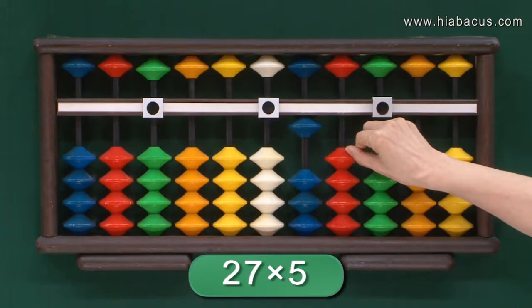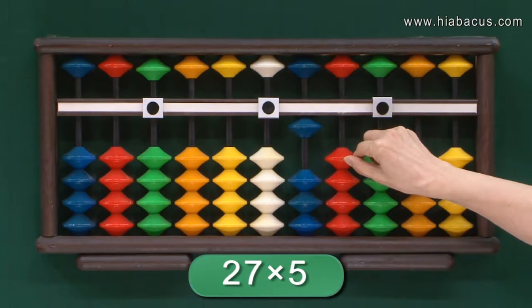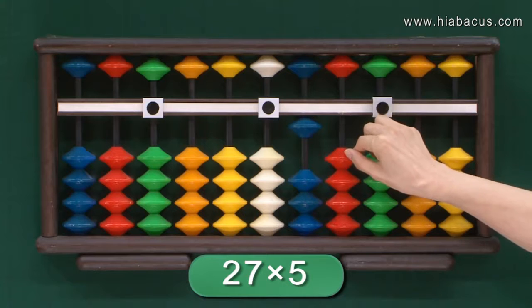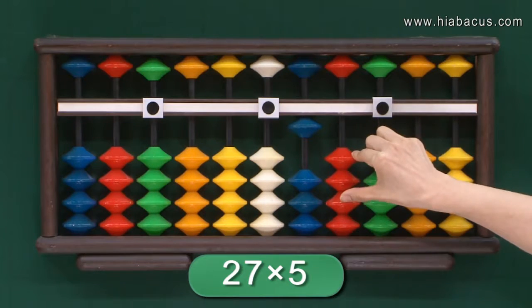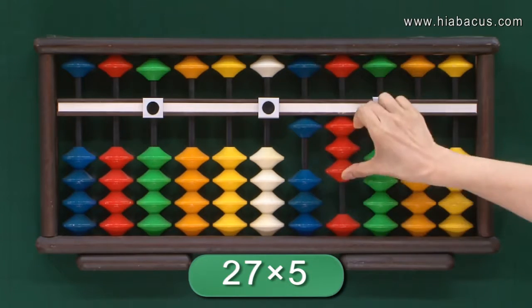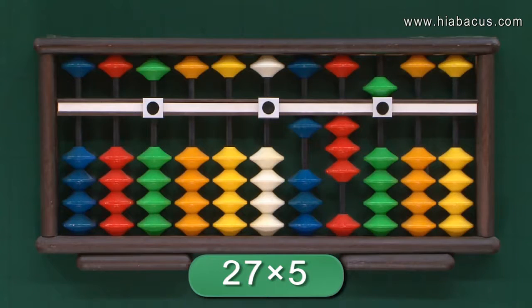And then 5 times 7 is 35. If you set 35 from where you put the finger, how is it? We got the answer right — it's 135.